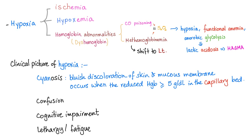Functional anemia — the red blood cells cannot transport oxygen to the tissue, so it's like anemia. Anaerobic glycolysis: we ran out of oxygen and switched to anaerobic glycolysis, which will lead to lactic acidosis.